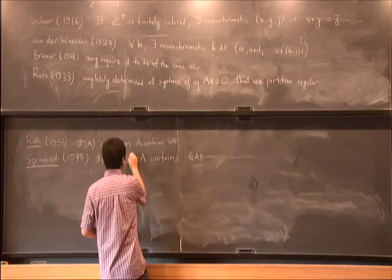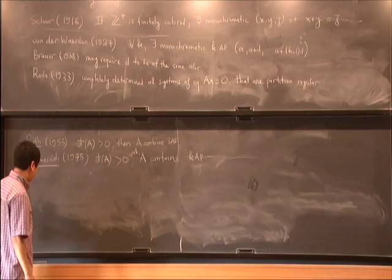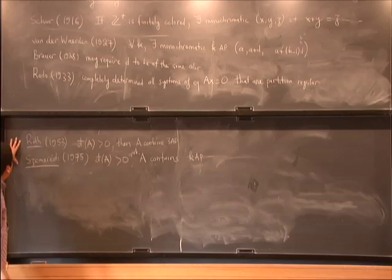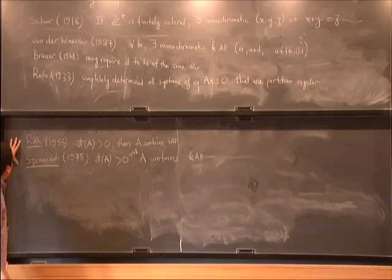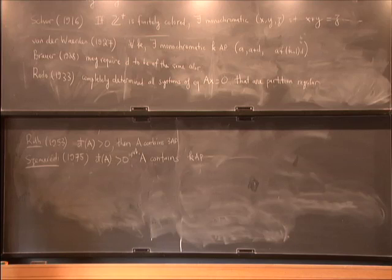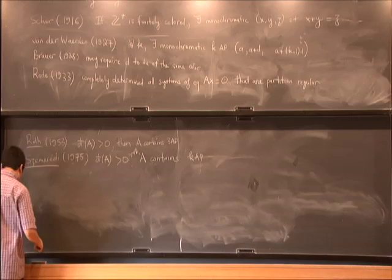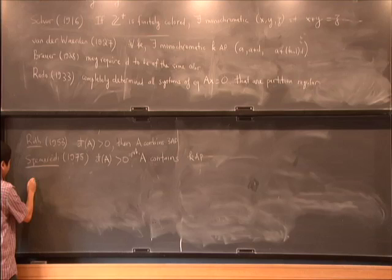And let me mention a couple of other results about sets of positive density. First I should mention that density results are stronger than partition results, but not every partition result has a density counterpart. For example, we don't have a density analog of Schur's theorem, because if you take the set of all numbers that are congruent to 1 modulo 3, then such an equation is not solvable in the set of numbers congruent to 1 modulo 3.